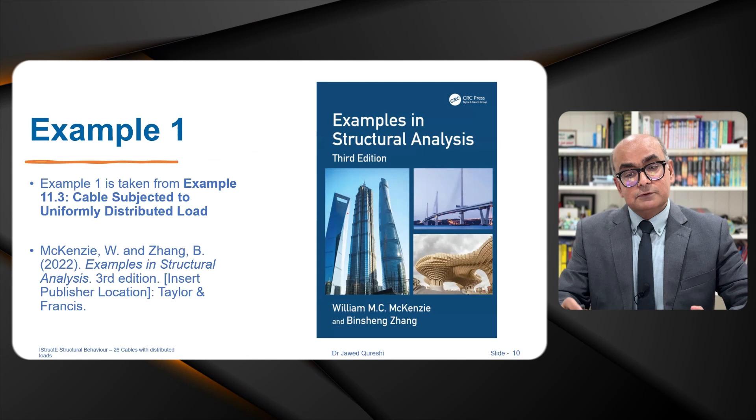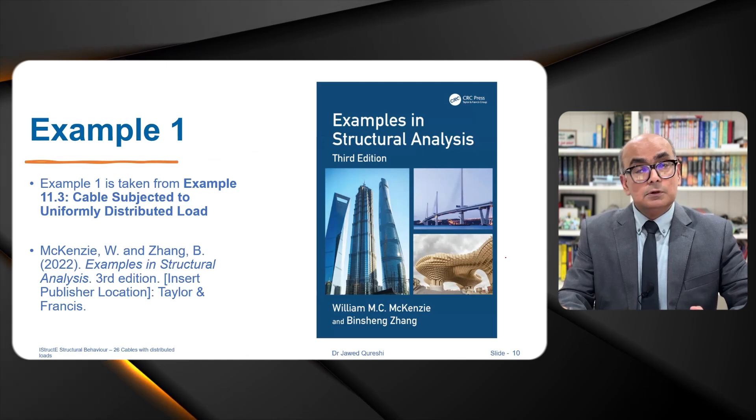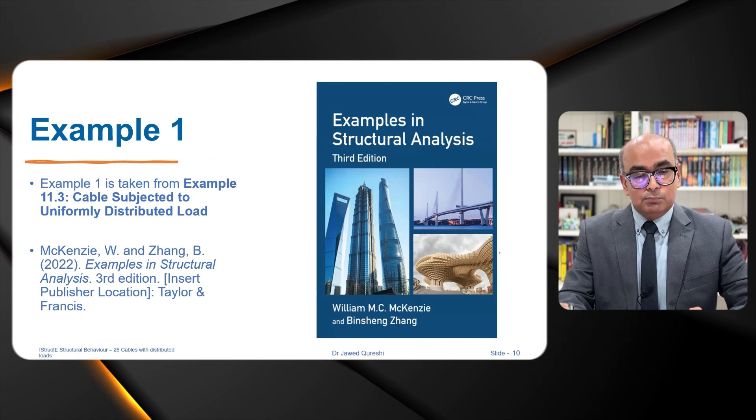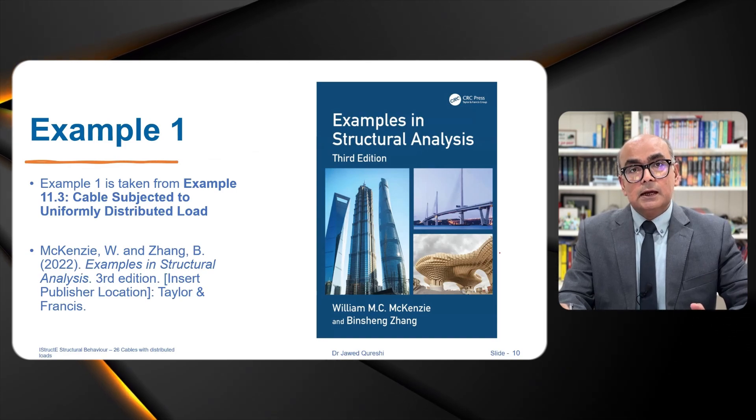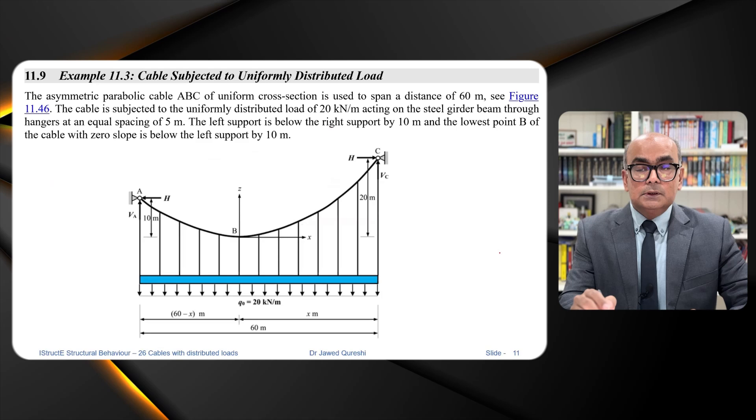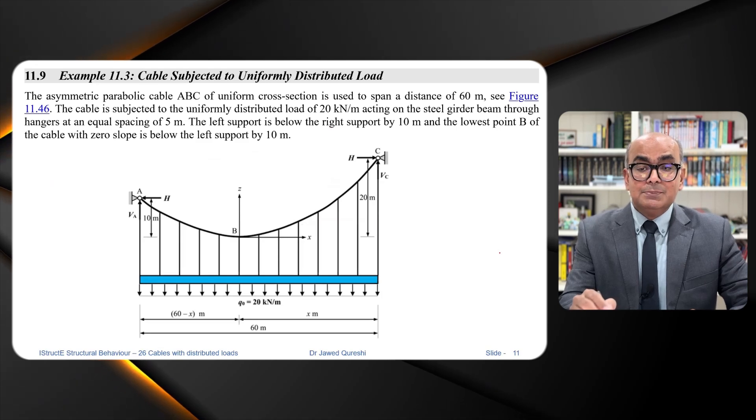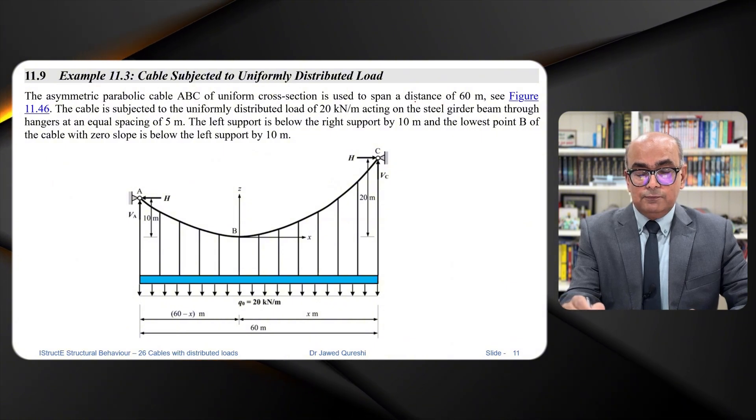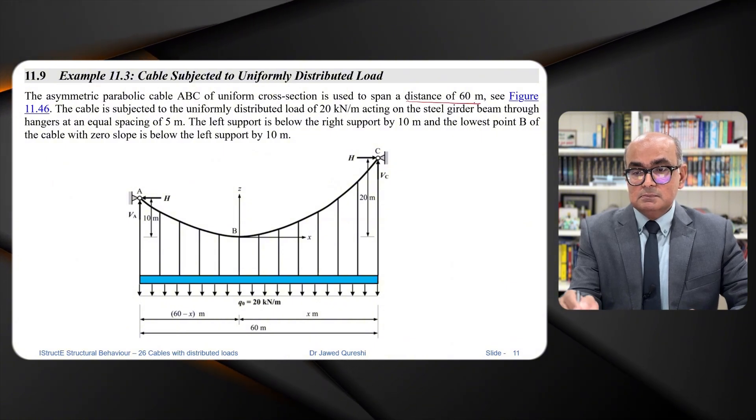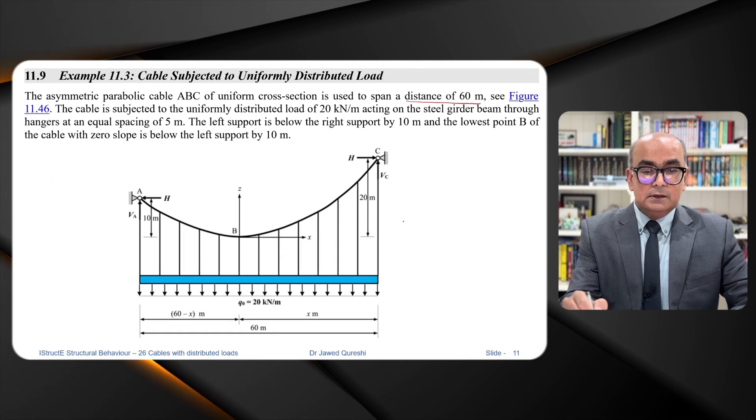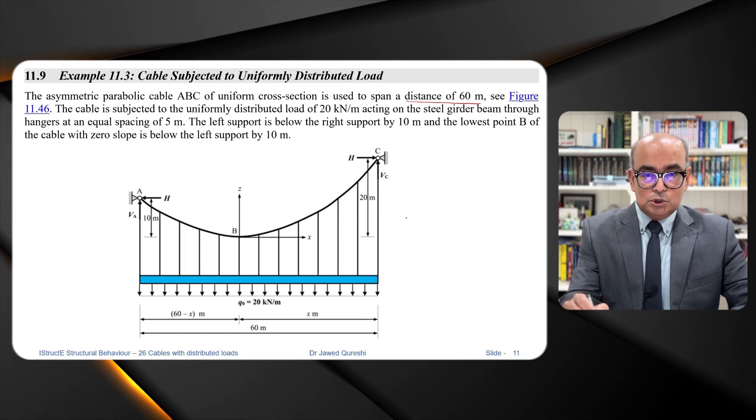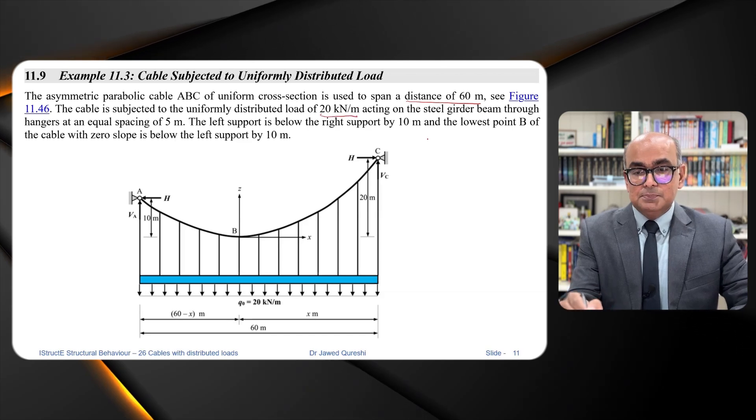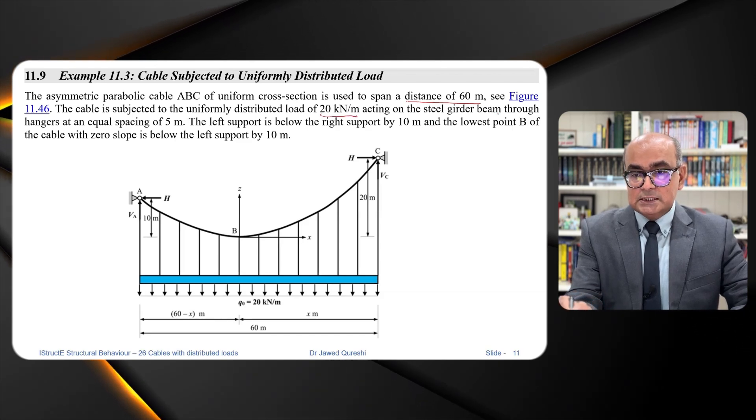The example that I'm going to solve today is taken from this book by McKenzie. And this is example 11.3. And I will be solving this example. The symmetric parabolic cable ABC of uniform cross section has distance of 60 meter in this figure.